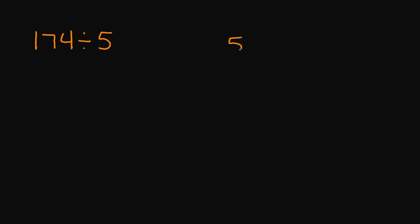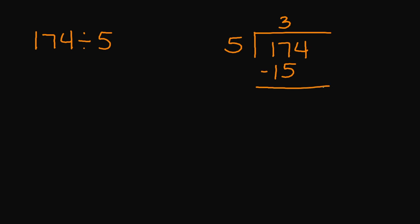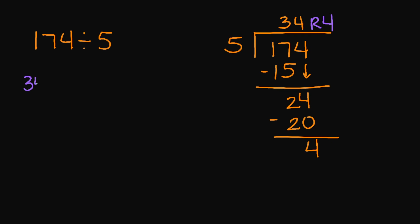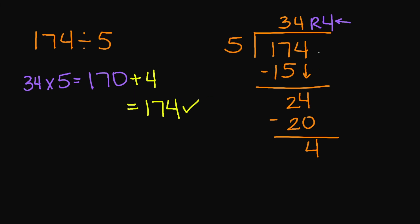Let's try one more: 174 divided by 5. I'm going to write my 5 on the outside and then 174 on the inside. 5 goes into 17 three times. 5 times 3 is 15. 17 minus 15 is 2. I'm going to bring down my 4. 5 goes into 24 four times. 5 times 4 is 20. 24 minus 20 is 4. So your answer is 34 with a remainder of 4. To check my answer, I'm going to multiply 34 times 5, which equals 170. I do have a remainder to add, so 170 plus 4 is 174, which is the same answer as your dividend.